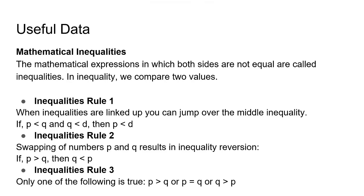Inequality rule 2 is swapping of numbers P and Q results in inequality reversion. For example, if P is greater than Q, then Q is less than P.